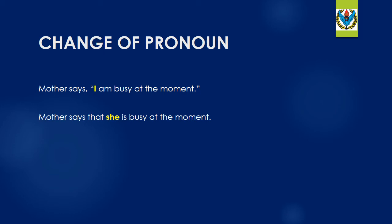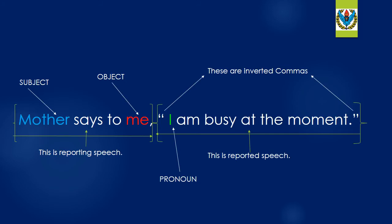So how do we change this pronoun? Where to put which pronoun? Look at the sentence: 'Mother says to me, I'm busy at the moment.' In this sentence, 'mother' is the subject, 'me' is the object, and 'mother says to me' is the reporting speech. 'I'm busy at the moment' is the reported speech enclosed in inverted commas. 'I' is the pronoun here. I have devised a simple rule: write S, then O, then N, with 1 on top of S, 2 on top of O, and 3 on top of N.